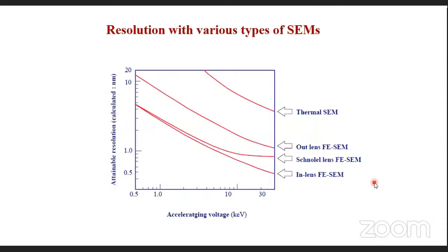Regarding resolution with various types of SEMs: thermal SEM gives you lower resolution images, while field emission scanning electron microscopes give you better resolution with increasing acceleration voltage.